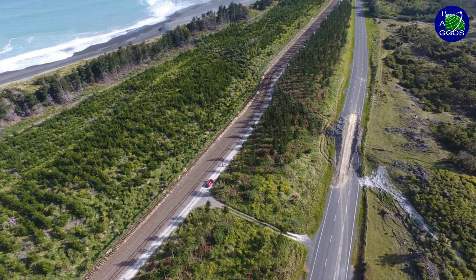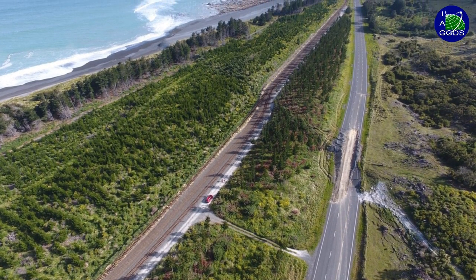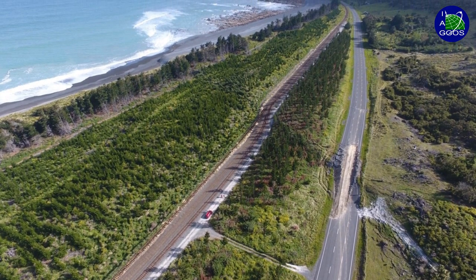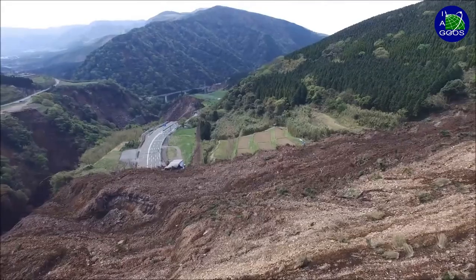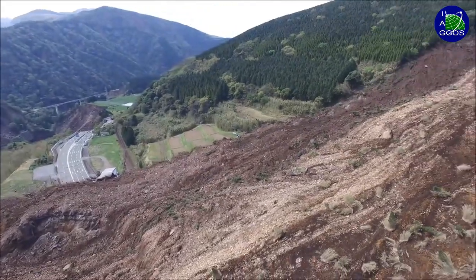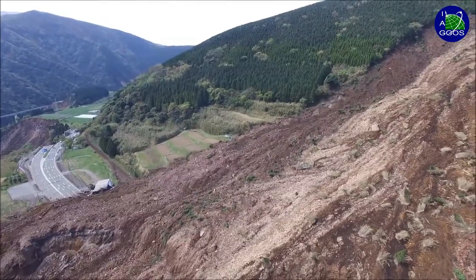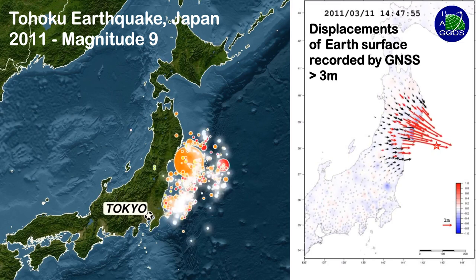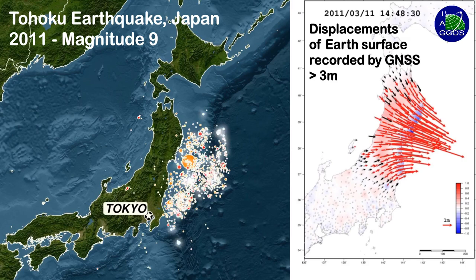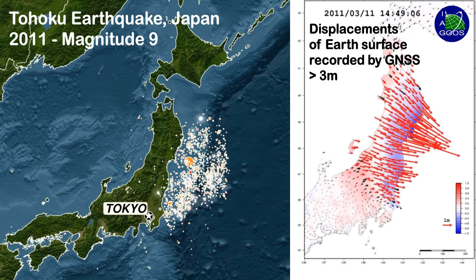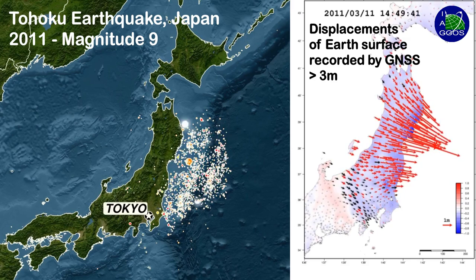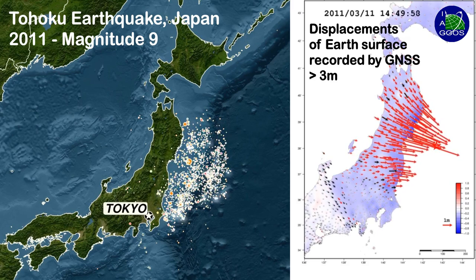Moreover, the ITRF is also used to model, detect, and understand displacements caused by natural hazards and disasters. For example, this helps inform disaster risk reduction efforts for devastating earthquakes, such as events in Chile and Japan, where co-seismic displacements reach more than three meters.